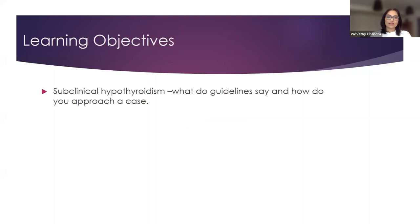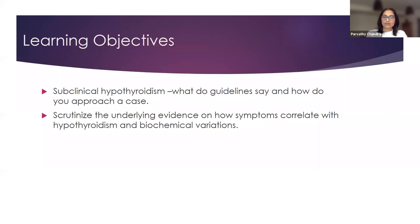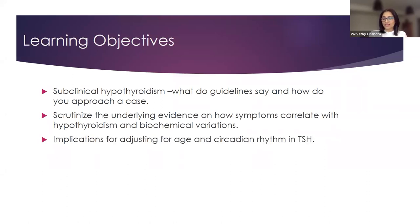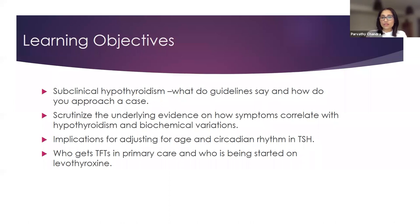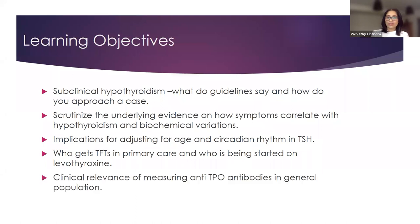What we're going to learn today is about subclinical hypothyroidism. We'll look at what the guidelines say and how to approach a case. Then we'll unpick the underlying evidence on which these guidelines are based, particularly looking at how symptoms correlate with hypothyroidism and biochemical variations in TSH. We'll look at age-adjusted TSH implications, circadian rhythm changes in TSH, who gets thyroid function tests done in primary care, who gets started on thyroxine, and the clinical relevance of measuring anti-thyroperoxidase antibodies.